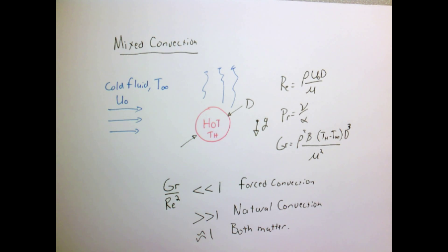In that case, you can actually find, if one looks hard enough, correlations that account for both effects of natural and forced convection. But the nice thing is that if we just calculate our dimensionless numbers from the start—the Reynolds number, the Prandtl number, the Grashof number—it gives us an indication of which regime we're in and we can sort of go from there.